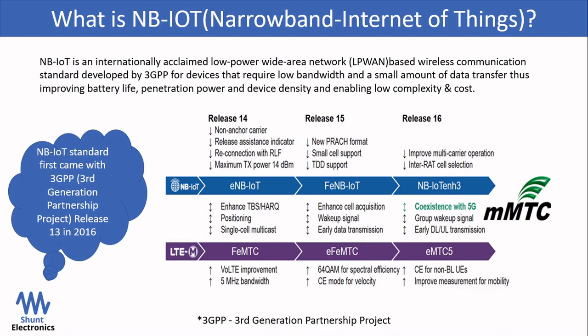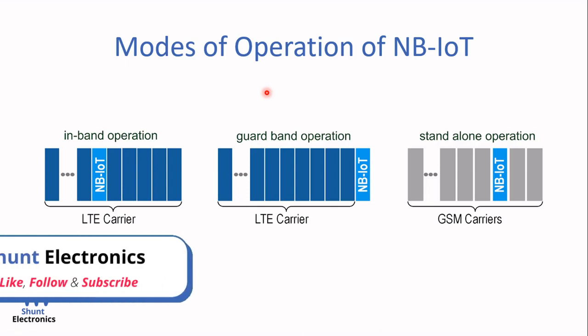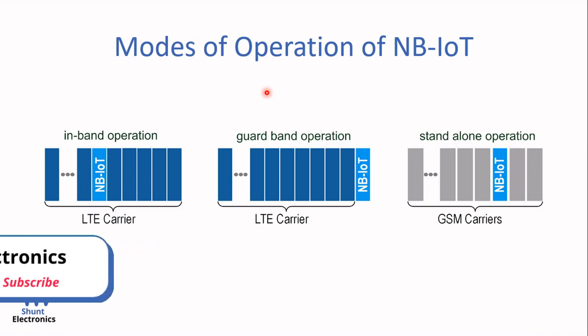NB-IoT is an internationally acclaimed low power wide area network-based wireless communication standard developed by 3GPP for devices that require low bandwidth and a small amount of data transfer, thus improving battery life, penetration power, and device density, and enabling low complexity and costs. All wireless communication systems transmit and receive signals in a particular frequency band — like Bluetooth, Wi-Fi, and mobile communication systems. Our frequency band is already crowded, and NB-IoT has a bandwidth of 200 kHz. Here we will see the different modes of operation of NB-IoT in the crowded licensed spectrum.